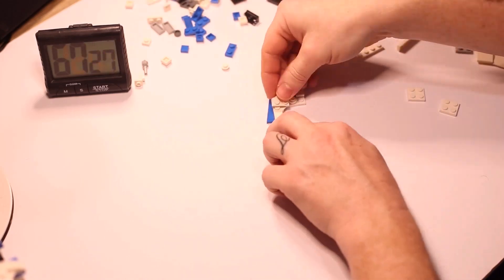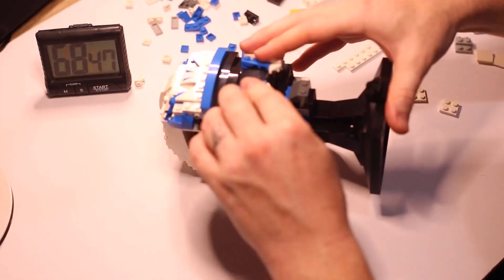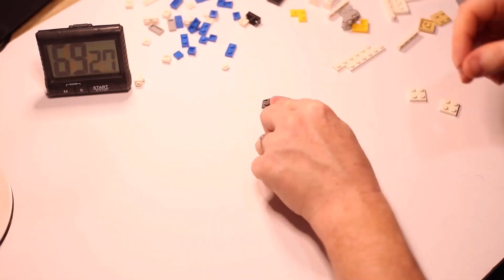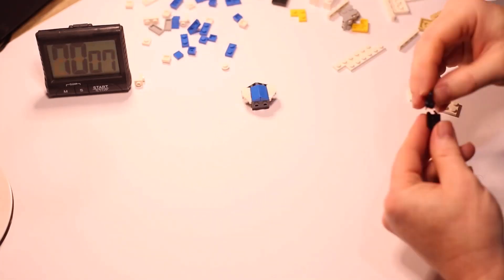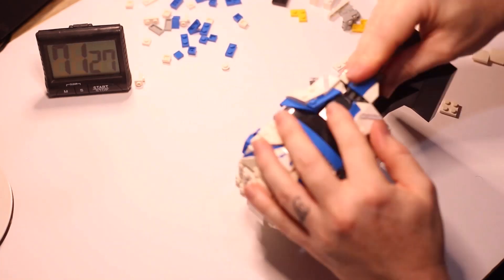So where this model lets itself down is definitely the stickers. Getting the weld lines to line up is a pain, and on my model, it looks a bit out of place. So I'm a bit disappointed about that. But to get that detail, this is the only way I think they could have achieved this.